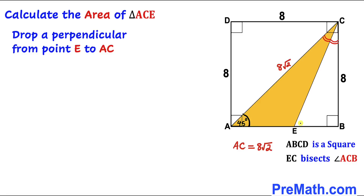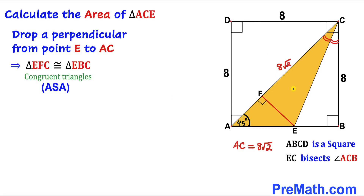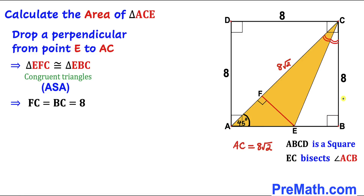Next, let's drop a perpendicular from point E onto line segment AC, creating point F, so angle EFA is 90 degrees. As a result, we can see that the two triangles formed are congruent: the angles are equal, each has a 90-degree angle, and side EC is common. Therefore side BC equals side FC in length.